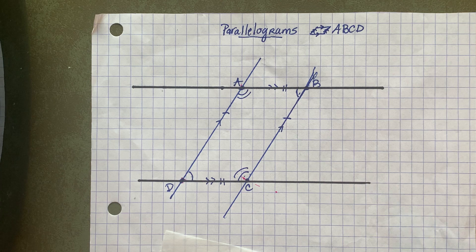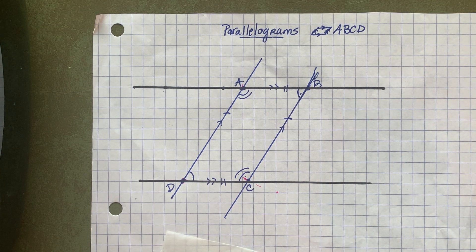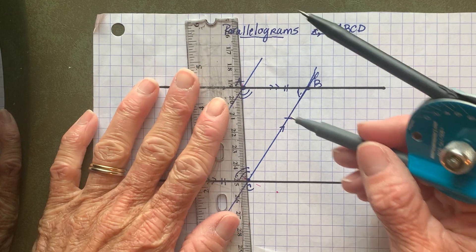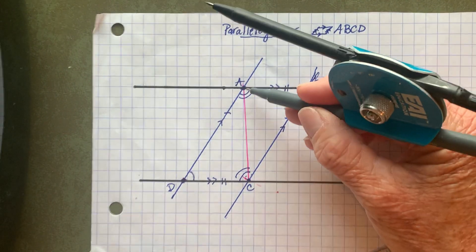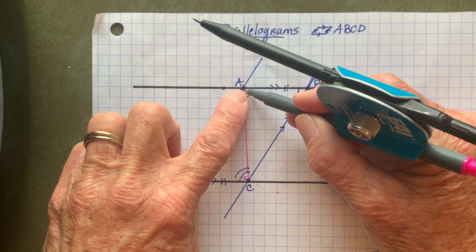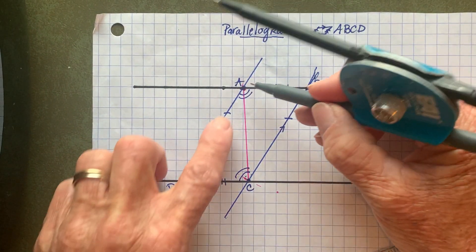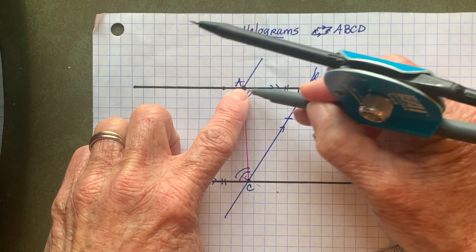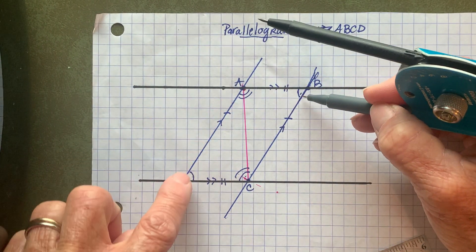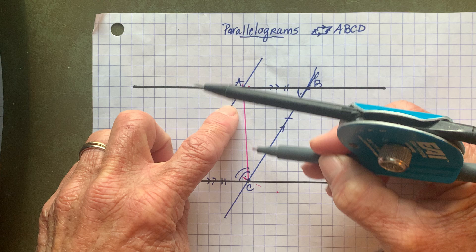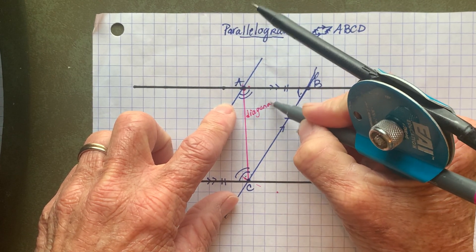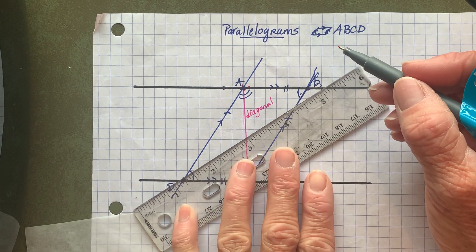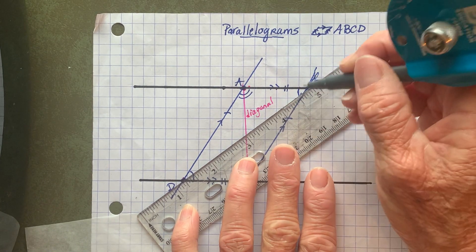If I draw the diagonals in this parallelogram — if I connect A to C, a diagonal connects vertices together that are not already connected. A is already connected with B and D; those make the sides of the parallelogram. When I connect it to C, this is a diagonal of that parallelogram. There's one more I can draw when I connect B and D.